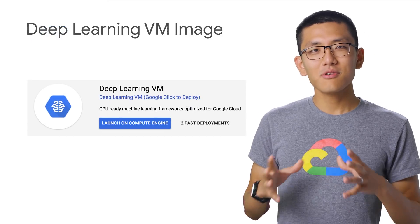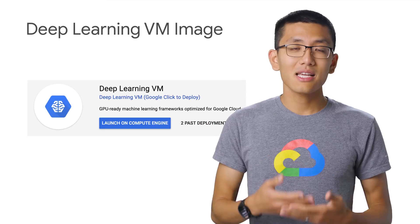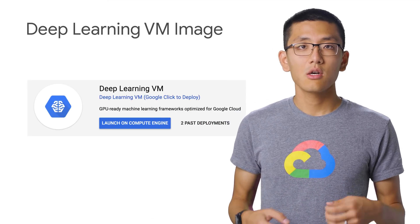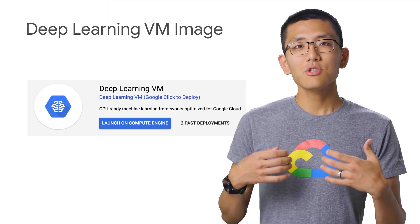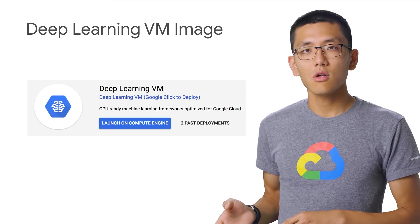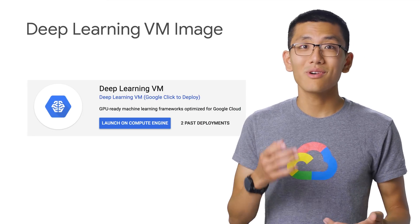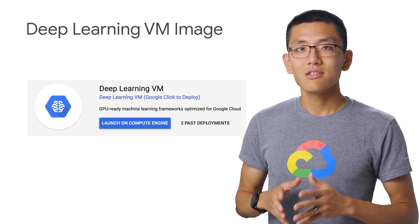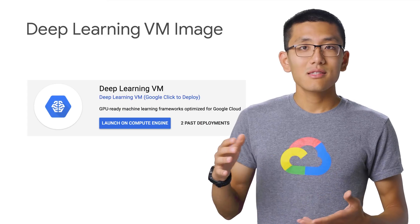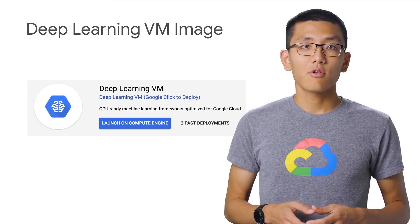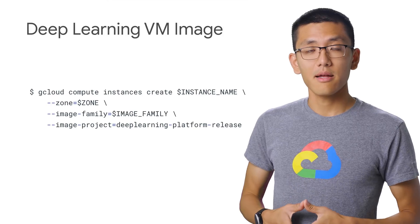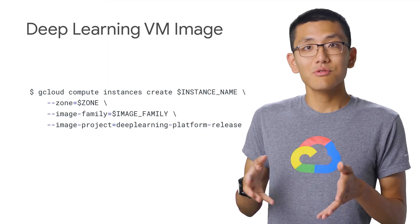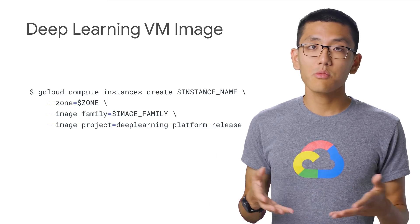The Google Cloud Deep Learning VM image makes it easy and fast to instantiate a VM image containing the most popular deep learning and machine learning frameworks, all on a Google Compute Engine instance. It lets you launch Compute Engine instances pre-installed with your choice of ML frameworks, like TensorFlow or even PyTorch. And you can easily add Cloud TPU and GPU support. You can either instantiate the image using the Google Cloud Platform Cloud Launcher UI or from the command line, so you get to use your favorite open source tools even sooner without having to keep them up to date or deal with installation troubles.